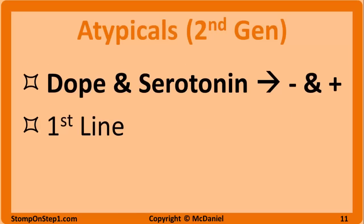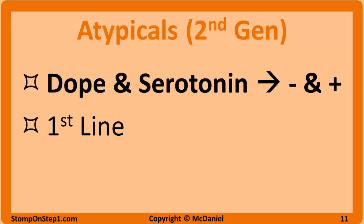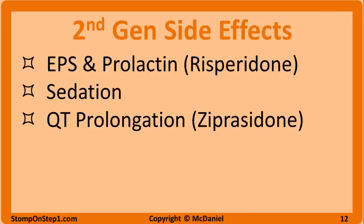Atypical antipsychotics, or second generation antipsychotics, block both dopamine and serotonin receptors, meaning they treat positive and negative symptoms. They also may have improved specificity which limits side effects compared to typical antipsychotics, and they are largely used as first-line medications. You can still get all the same side effects as with typical antipsychotics, but in theory they should be much less common. In particular, risperidone has a side effect profile closer to the typicals, with EPS and hyperprolactinemia more commonly than the other second-gens.